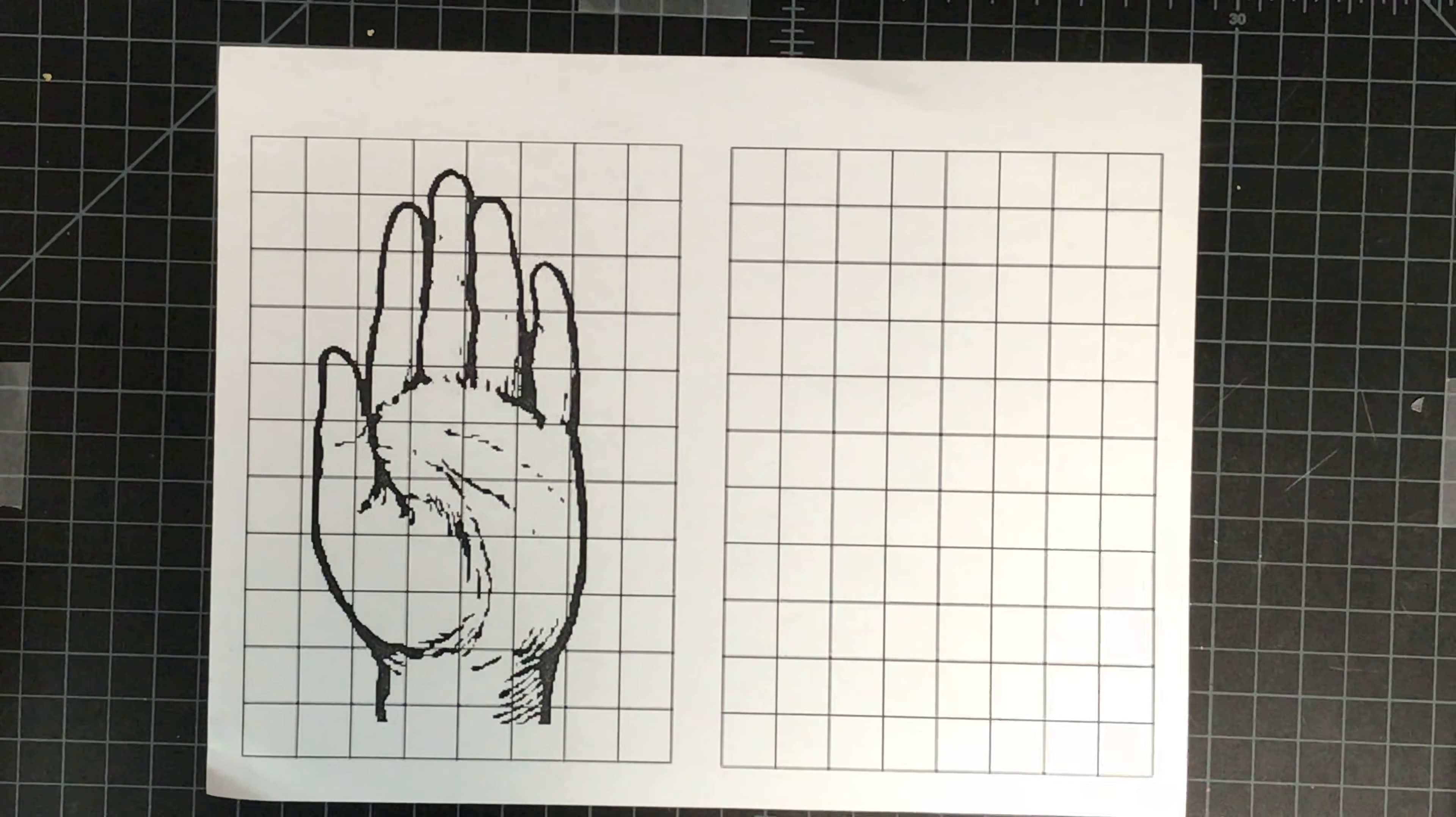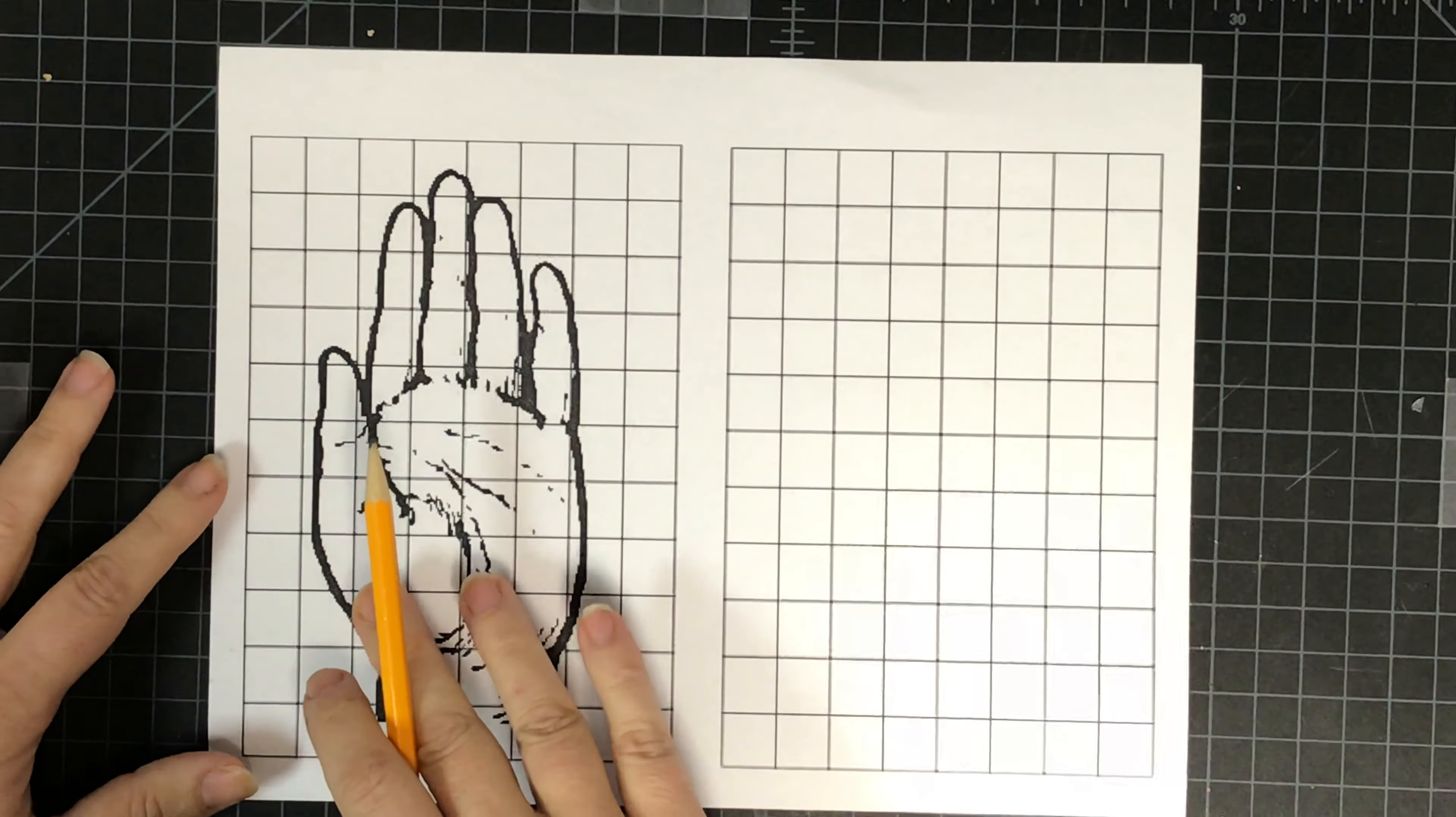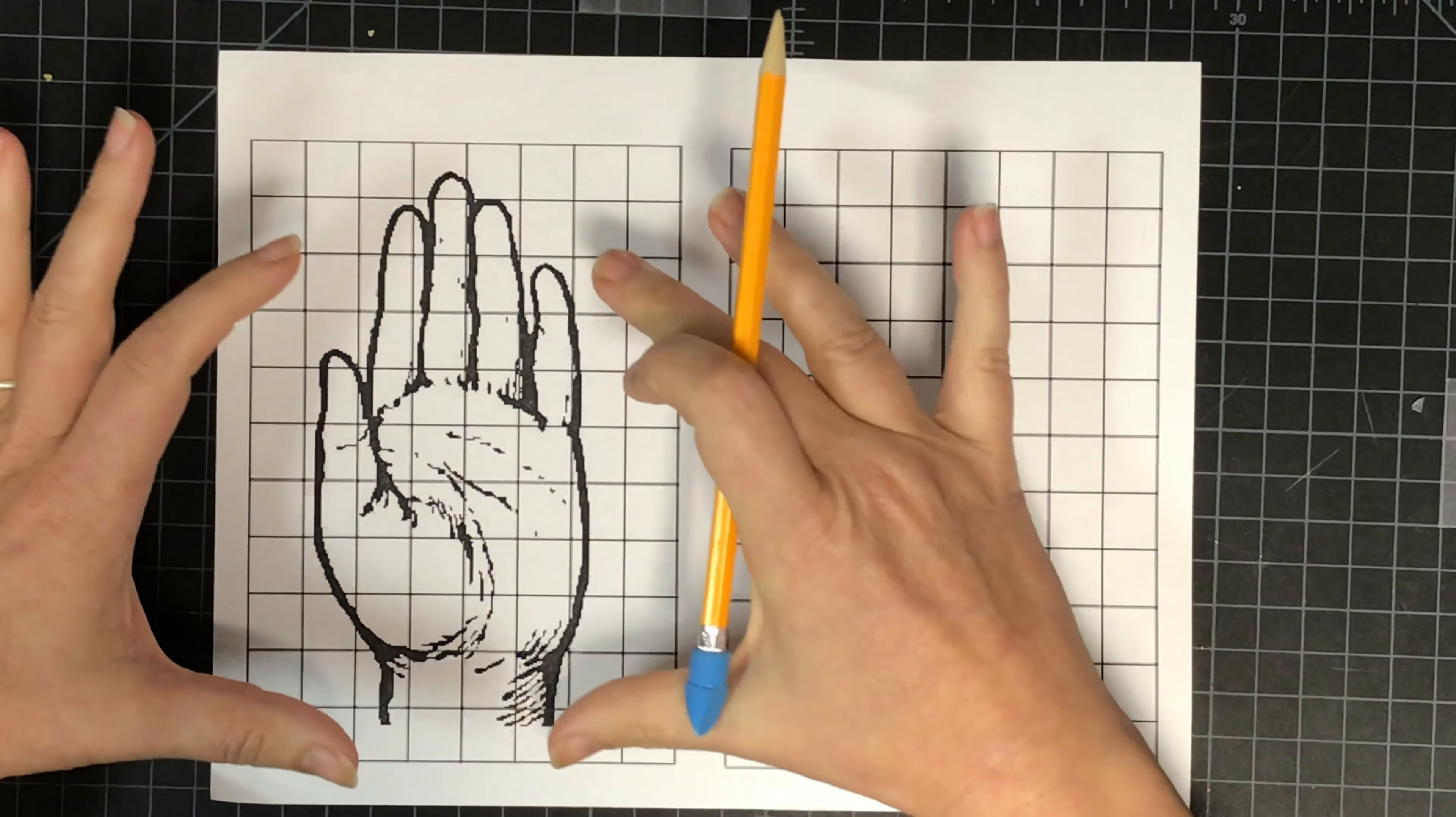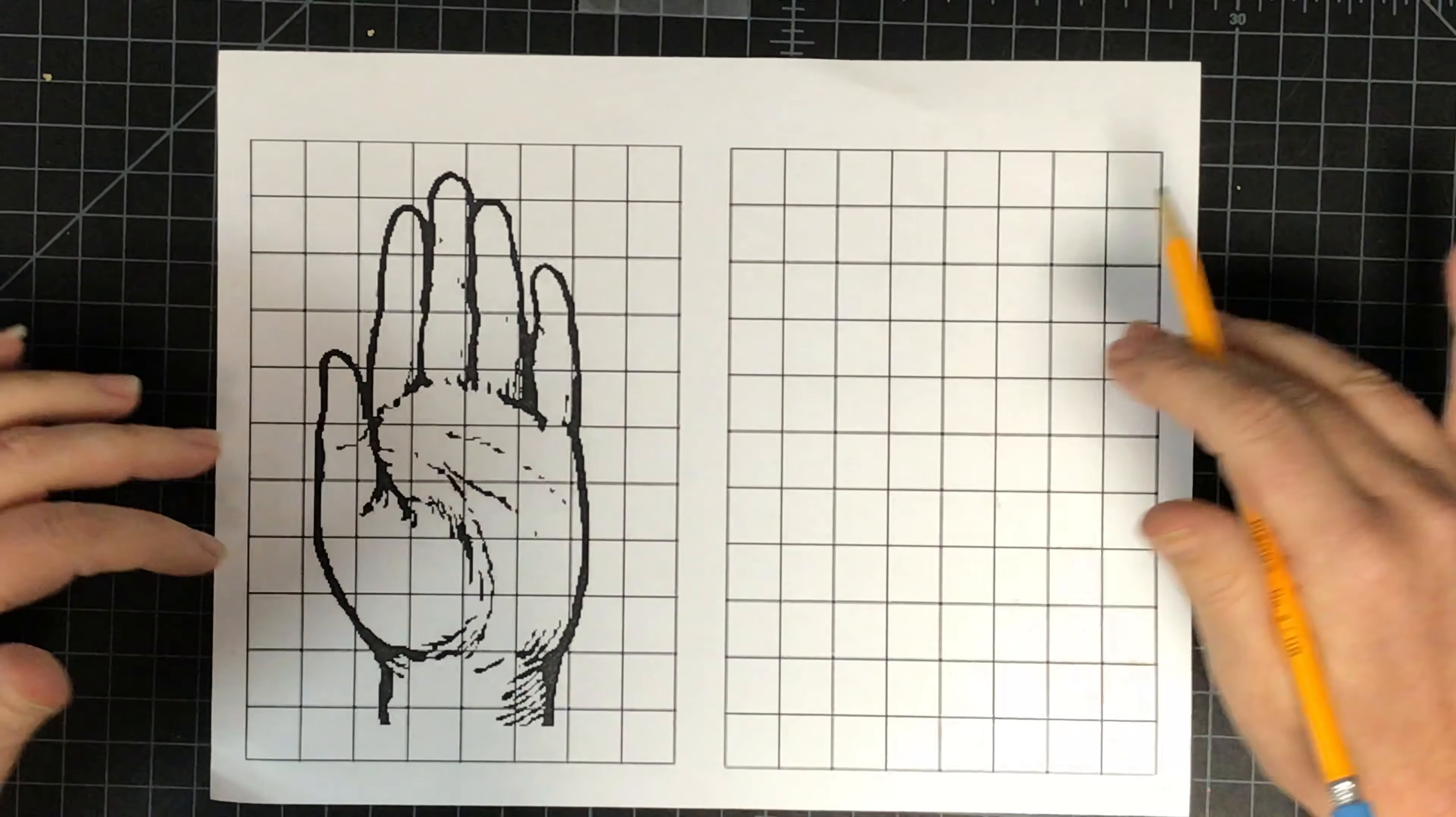Our next activity is going to be about how to use a grid to transfer a drawing so that you're drawing the same image and keeping it in proportion, so that things are in the right place and the right size.